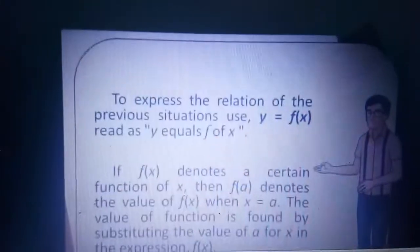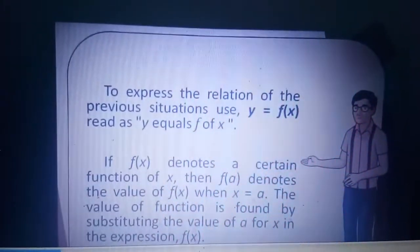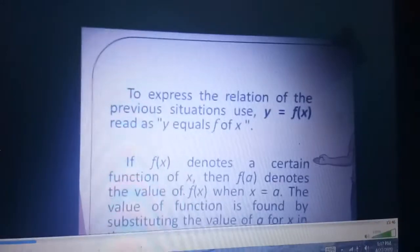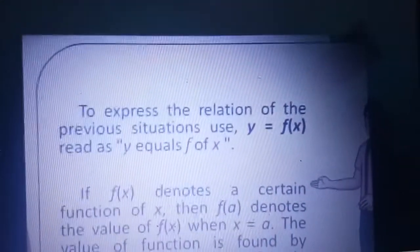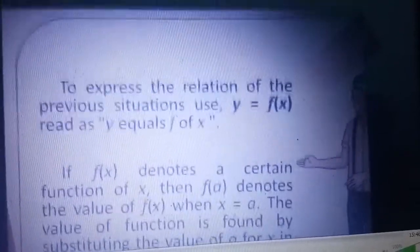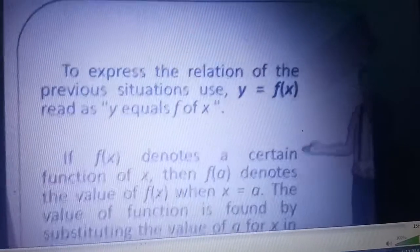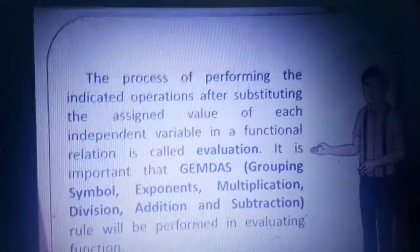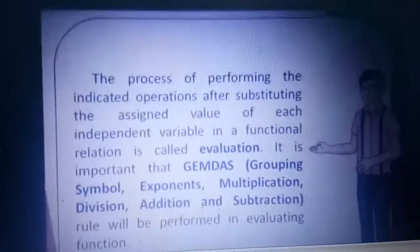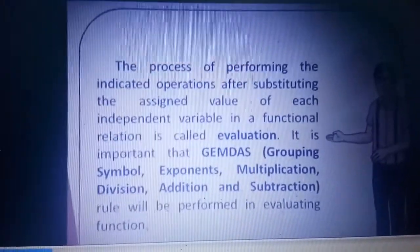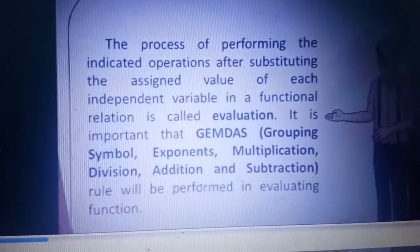Again, to express the relation of the previous equation, we are going to use Y is equal to F of X. We are going to read it as F of X. If F of X denotes a certain function of X, then F of A denotes the value of F of X where X is equal to A. The value of the function is found by substituting the value of A for X in the expression of F of X. The process of performing the indicated operation after substituting the assigned value of each dependent variable in the functional relation is called evaluation. So it is important that we are going to use the GEMDAS or PEMDAS.